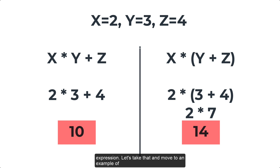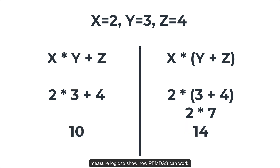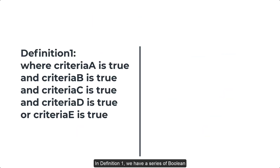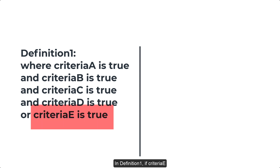Let's take that and move to an example of measure logic to show how PEMDAS can work. In Definition 1, we have a series of boolean expressions connected using AND statements. If criteria E is true, then the definition is true.